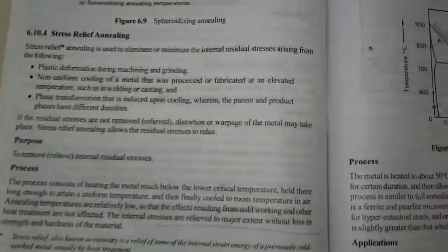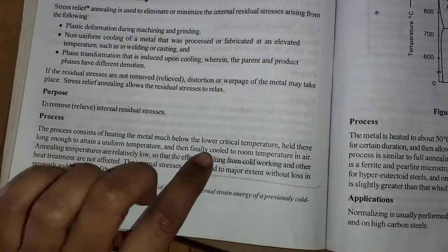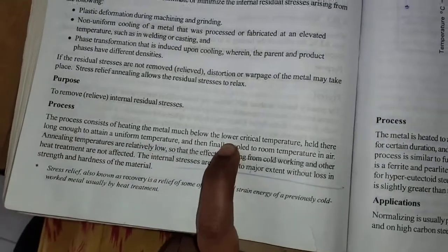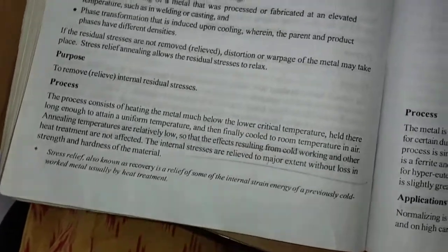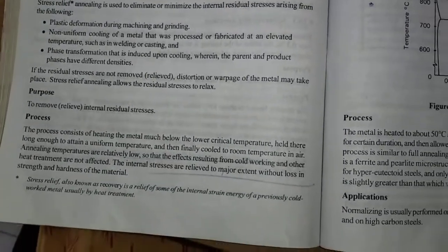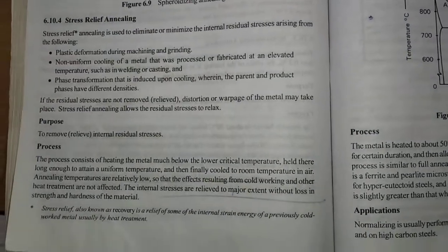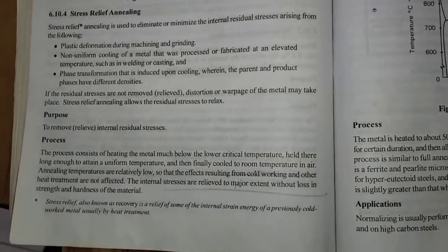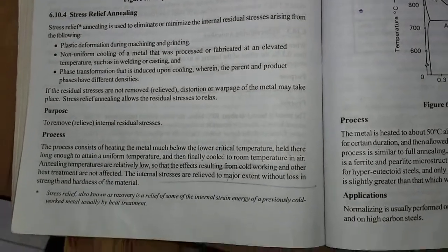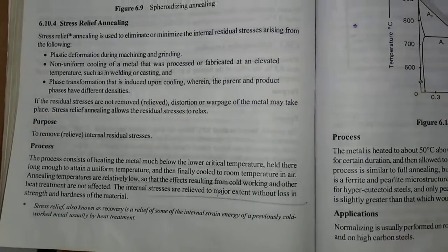The process involves heating the metal much below the lower critical temperature - say around 500 degrees Celsius, below 727 degrees. You hold it at that temperature until the specimen reaches 500 degrees Celsius completely, then finally cool it to room temperature.